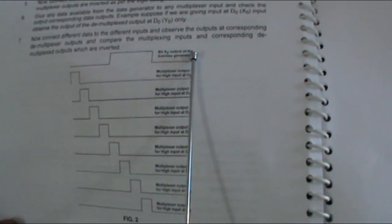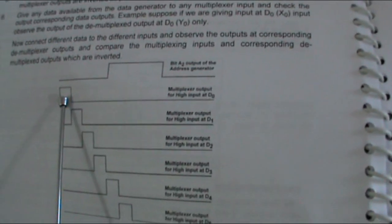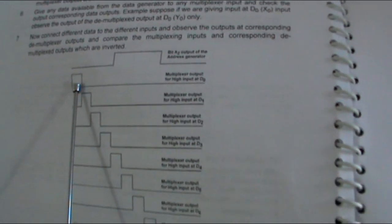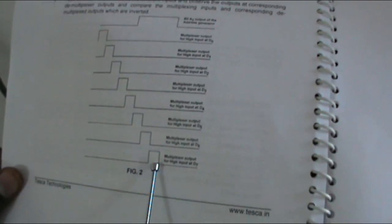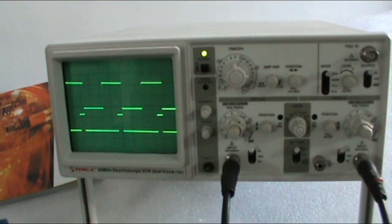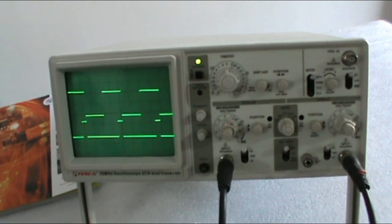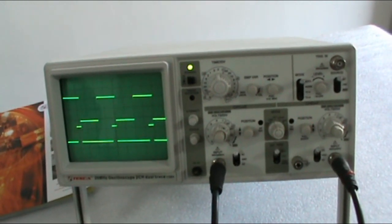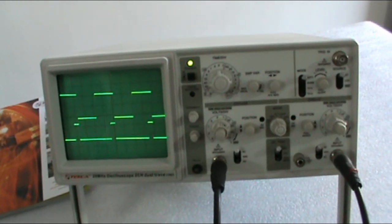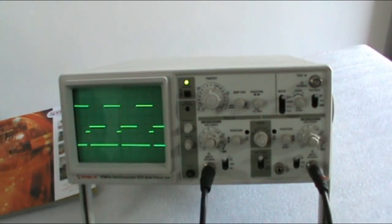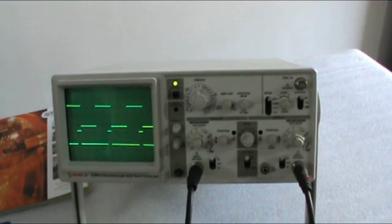This is the waveform. This is the A2 output. This is the multiplexer output for high input at D0, this is for D1, this is for D2, and this is for D7. You can observe the output of the multiplexer by applying the high signal one by one from X0 to X7.